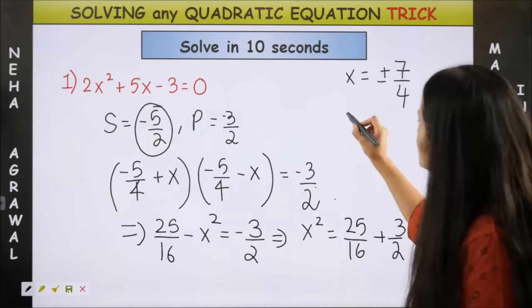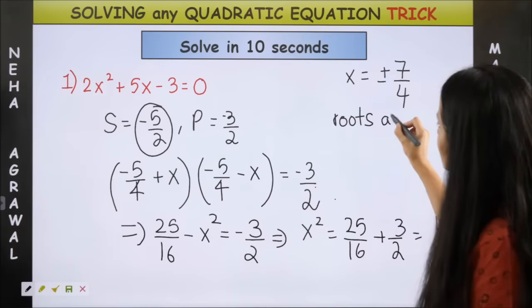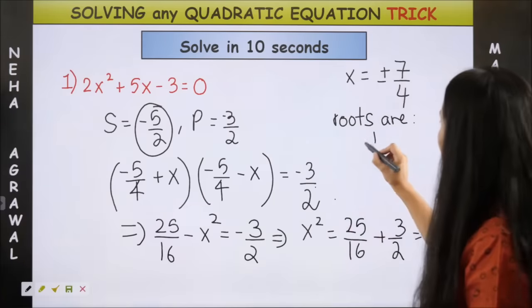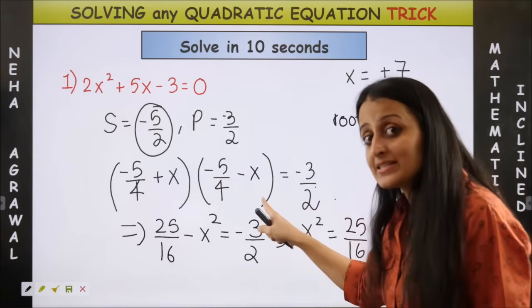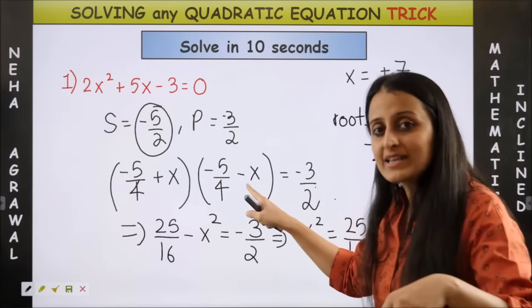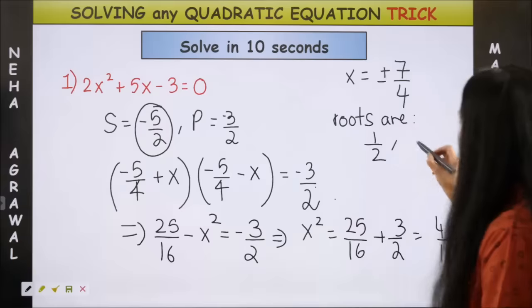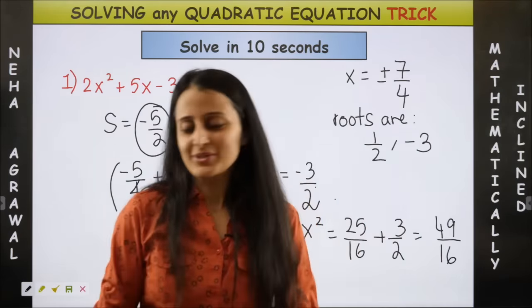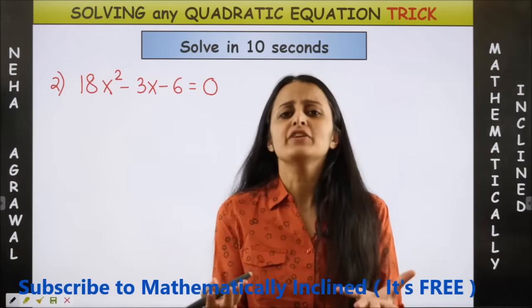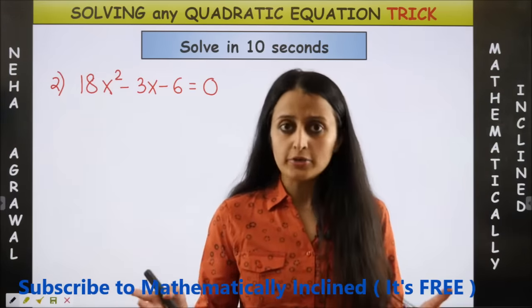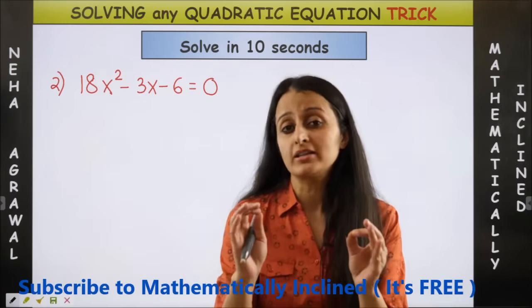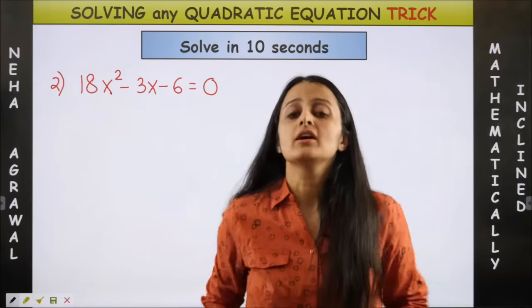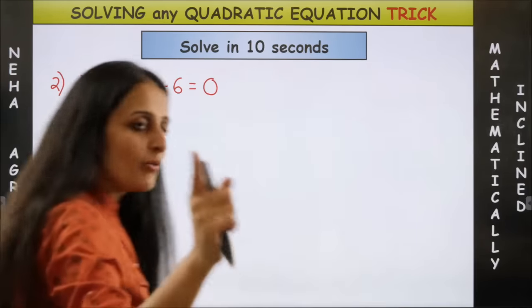If I take x as 7 by 4 so my roots are minus 5 by 4 plus 7 by 4 that makes it 2 by 4 so half and minus 5 by 4 minus 7 by 4 that makes it minus 12 by 4 minus 3. Bingo! These are the roots of the quadratic equation. Now you might feel we can anyway factorize using middle term splitting. Well you can of course go ahead and do that but this unique method makes it so mechanical. You know sirf sum and product nikalte hi you can get to the roots super quick.